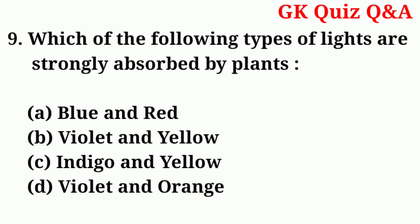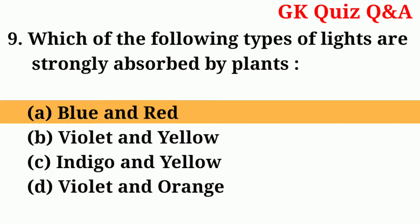Number nine: which of the following types of light are strongly absorbed by plants? Answer: number A — blue and red.